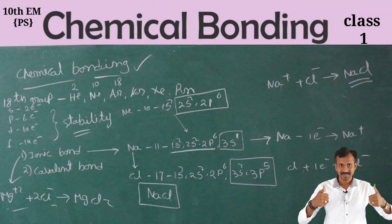In ionic bonding, when two atoms are present, both try to achieve stability. One atom may have extra electrons, another atom may be deficient in electrons — and they form a chemical bond.